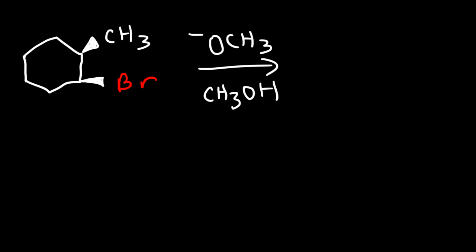We need to determine if the double bond will form on the right side or on the left side of the bromine atom. So we need to draw the adjacent hydrogens. There's a hydrogen on the dash and a hydrogen on the wedge on this side. And on the other side, because the methyl group is on the wedge, the hydrogen is on the dash.